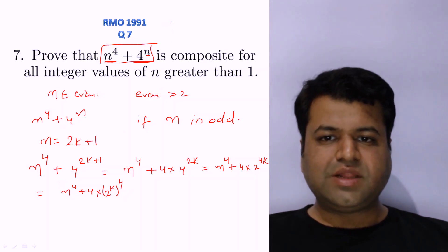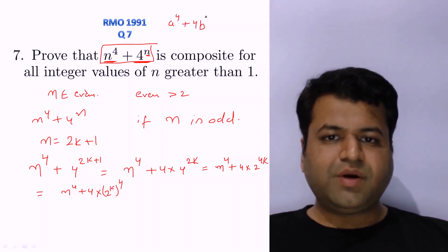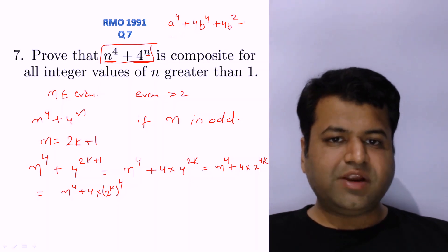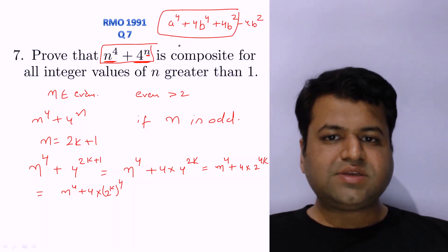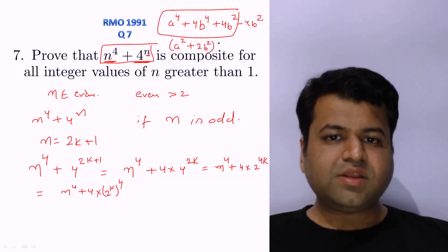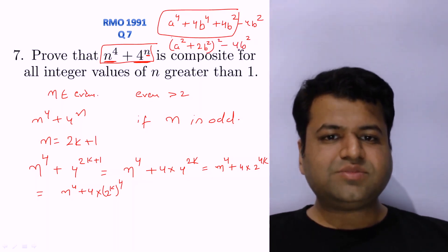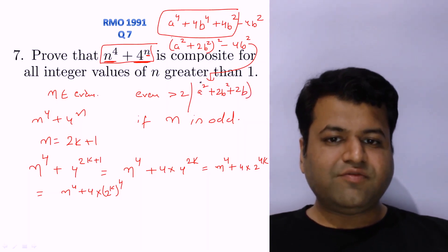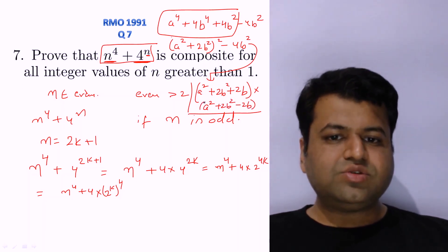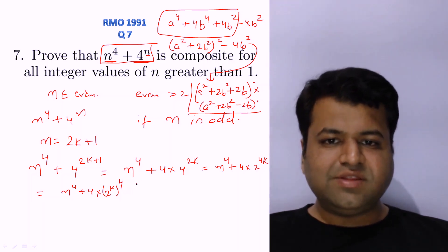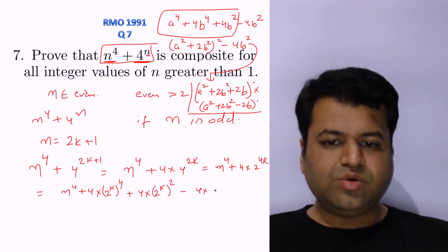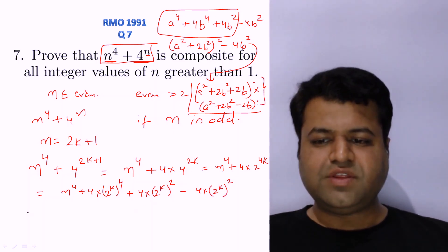The identity is: a⁴ + 4b⁴ = (a² + 2b² + 2b)(a² + 2b² − 2b). We derive it by adding and subtracting 4b²: a⁴ + 4b⁴ = (a² + 2b²)² − (2b)², which factors as a difference of squares into those two factors. We can directly apply this identity to our expression.